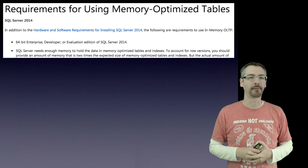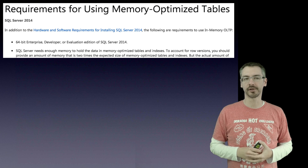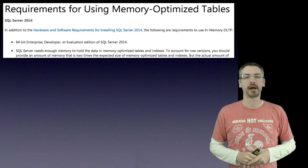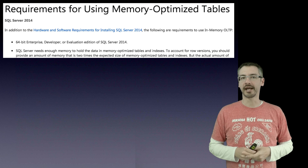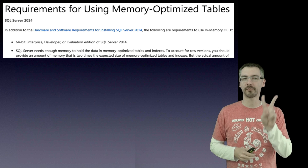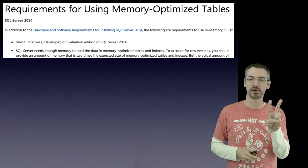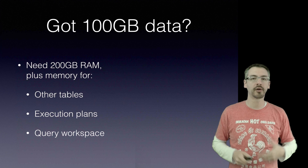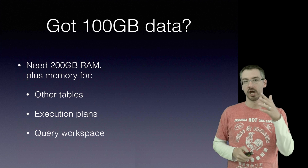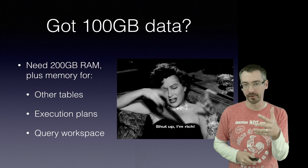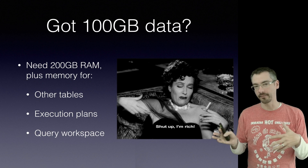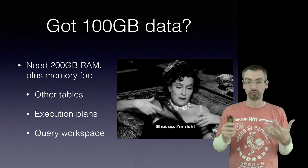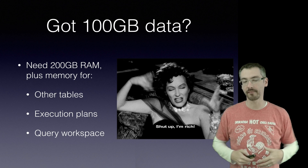So what are the requirements? Of course, we have to be on 64-bit SQL Server 2014 Enterprise Edition — this is one of those expensive edition features. Read that bottom bullet point: SQL Server needs enough memory to hold the data. To account for row versions, you should provide as much memory as two times the expected size of your in-memory tables. So if you have 100 gigs worth of data, you're probably going to need 200 gigs worth of RAM — and that is only for the Hekaton tables, not counting execution plans, query workspace memory, or any other tables.